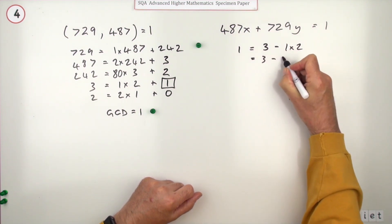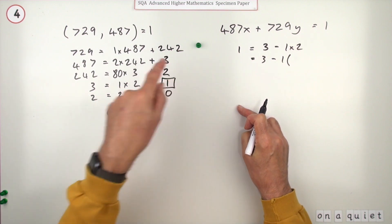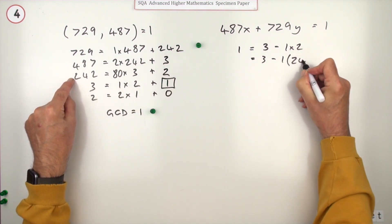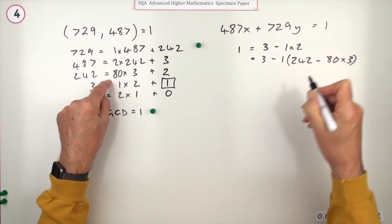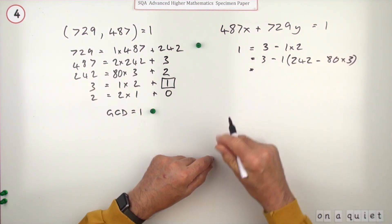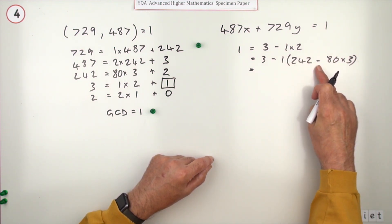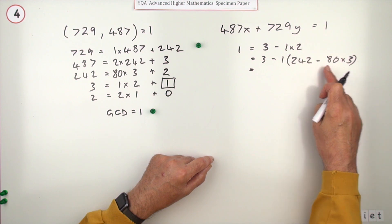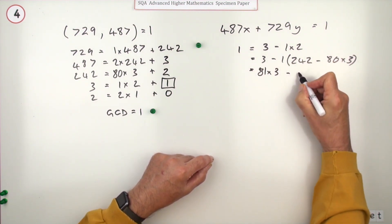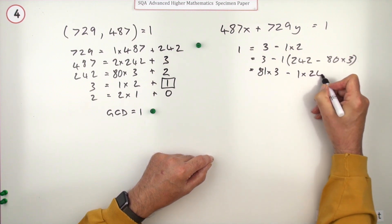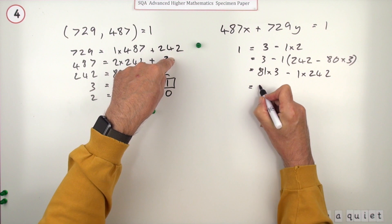That's equal to 3 minus 1 times - now you step up to the 2. 2 is equal to 242 minus 80×3. Now you tidy that up: I've got numbers of 242 and 3. Take away a negative, that's plus 80, and there's one of them already, so I've got 81 lots of 3 minus one lot of 242.